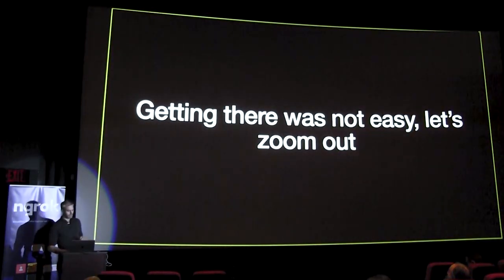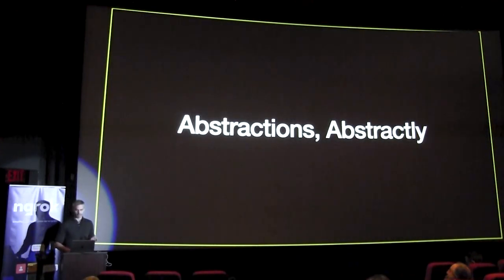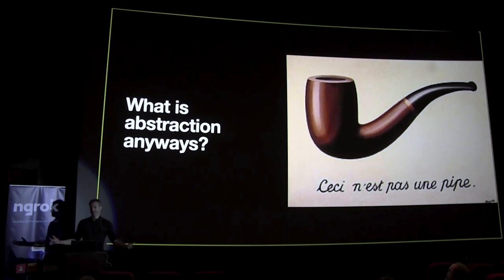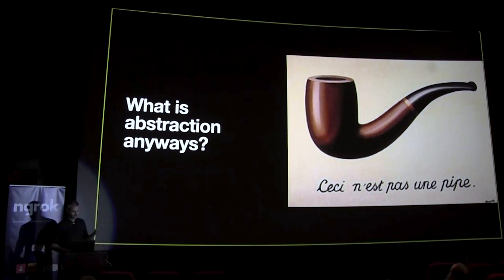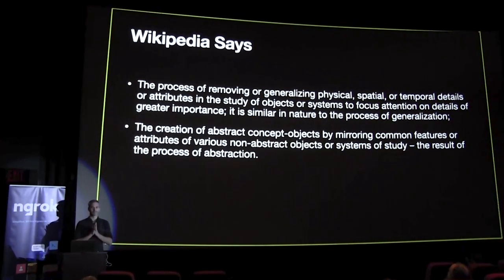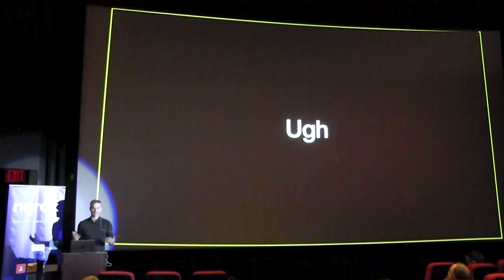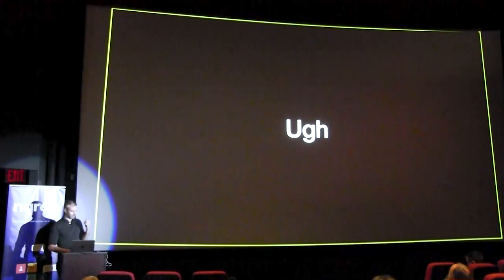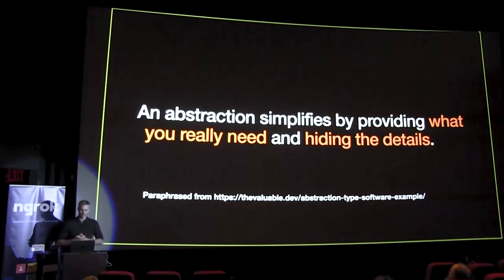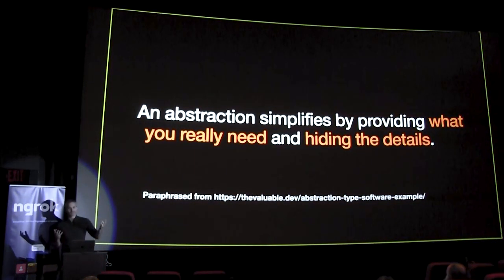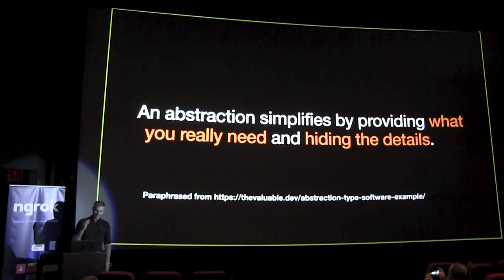Zooming out, I want to talk about abstractions abstractly. What is an abstraction? When I was researching this talk, I naturally went to sources on the internet. Wikipedia came back with way too many words. I found a really great piece written by The Valuable Dev, and I've paraphrased their definition here: an abstraction simplifies by providing what you really need and hiding the details. For me, this is really the core of abstraction. Software is abstraction — that is our work, that is our job — and so this is really the core of software engineering.